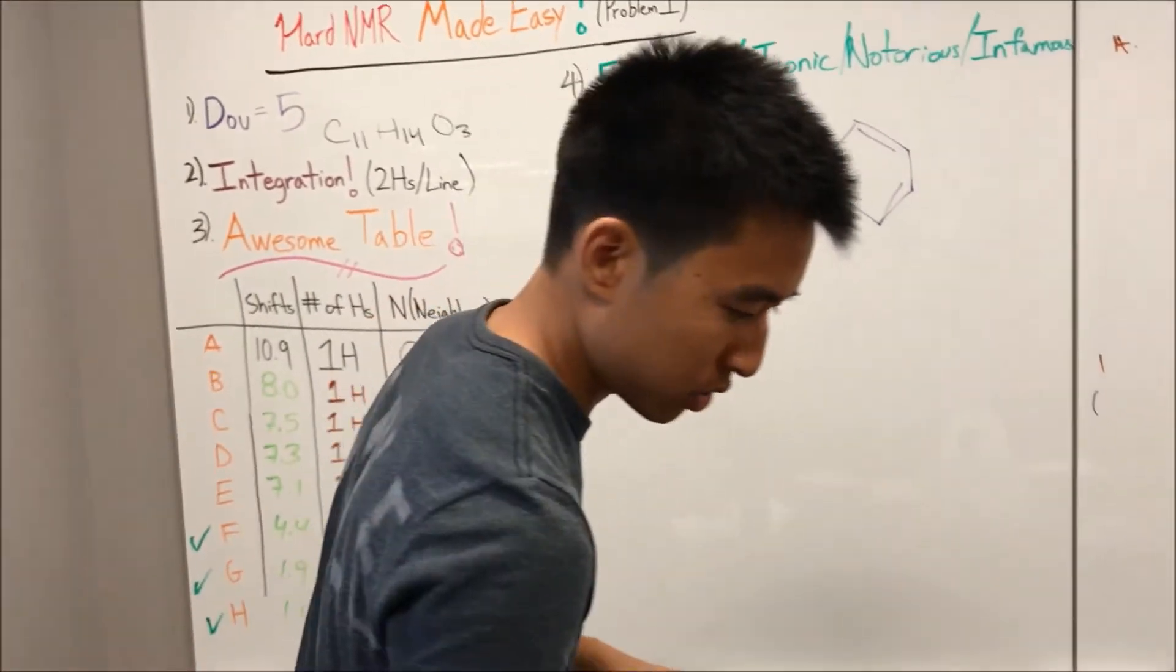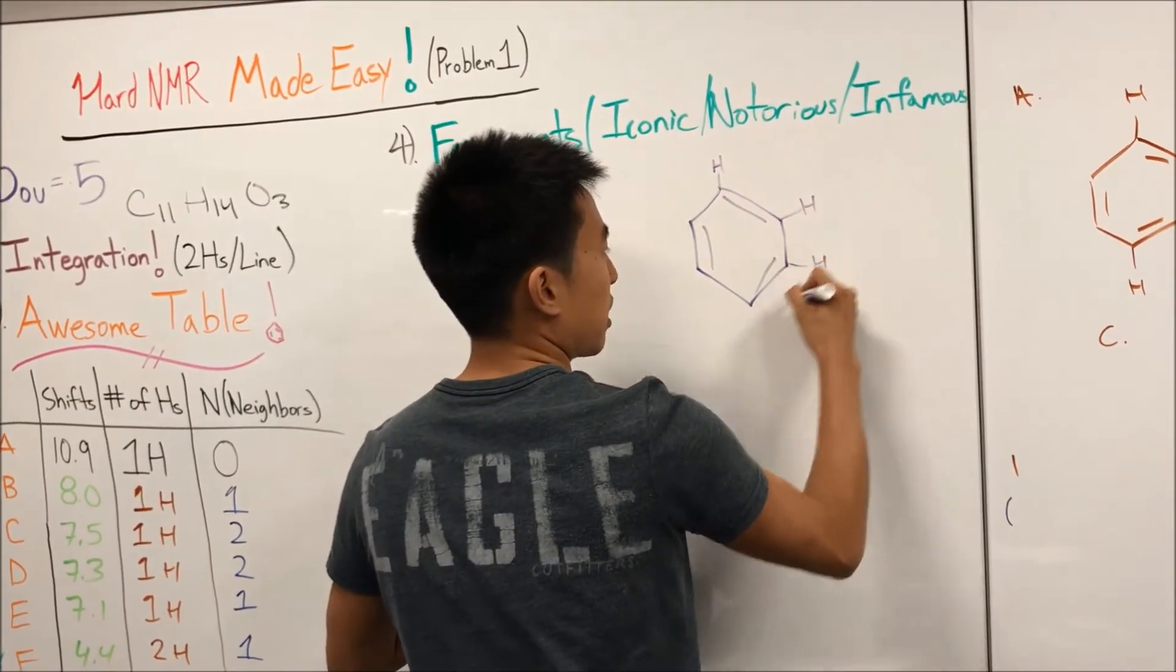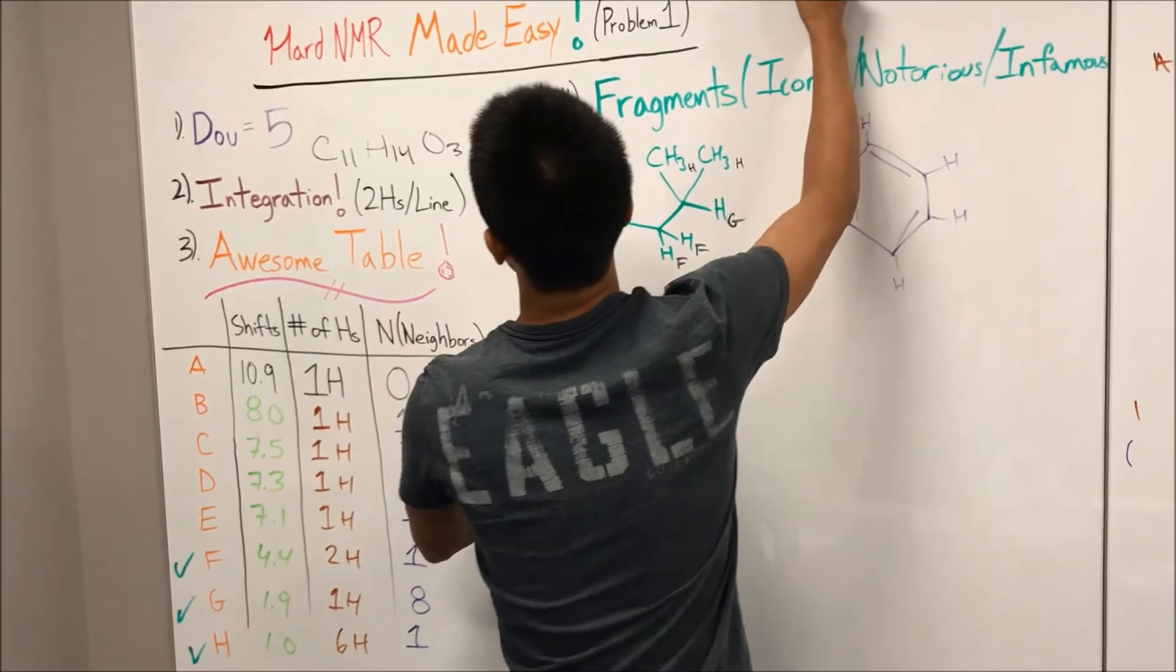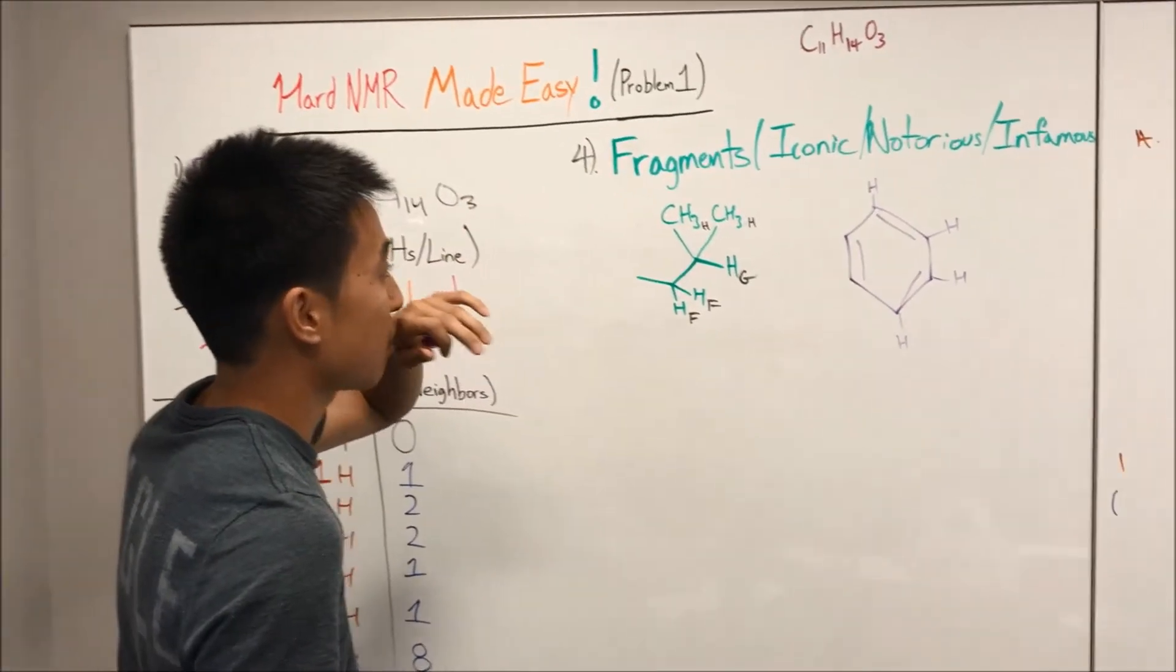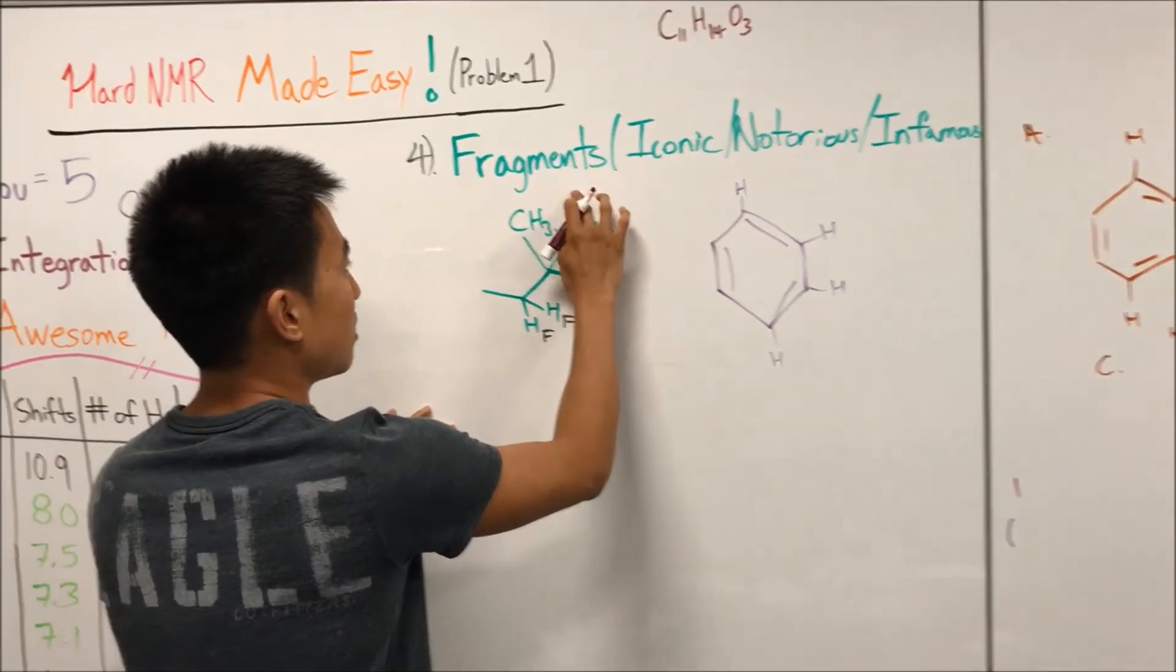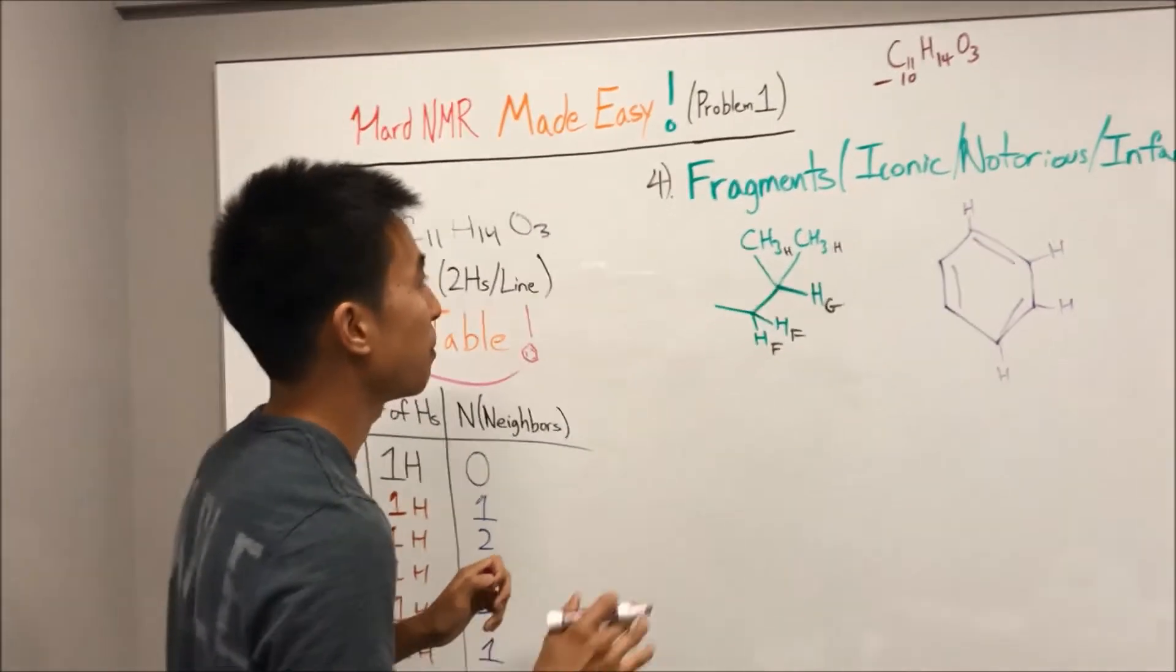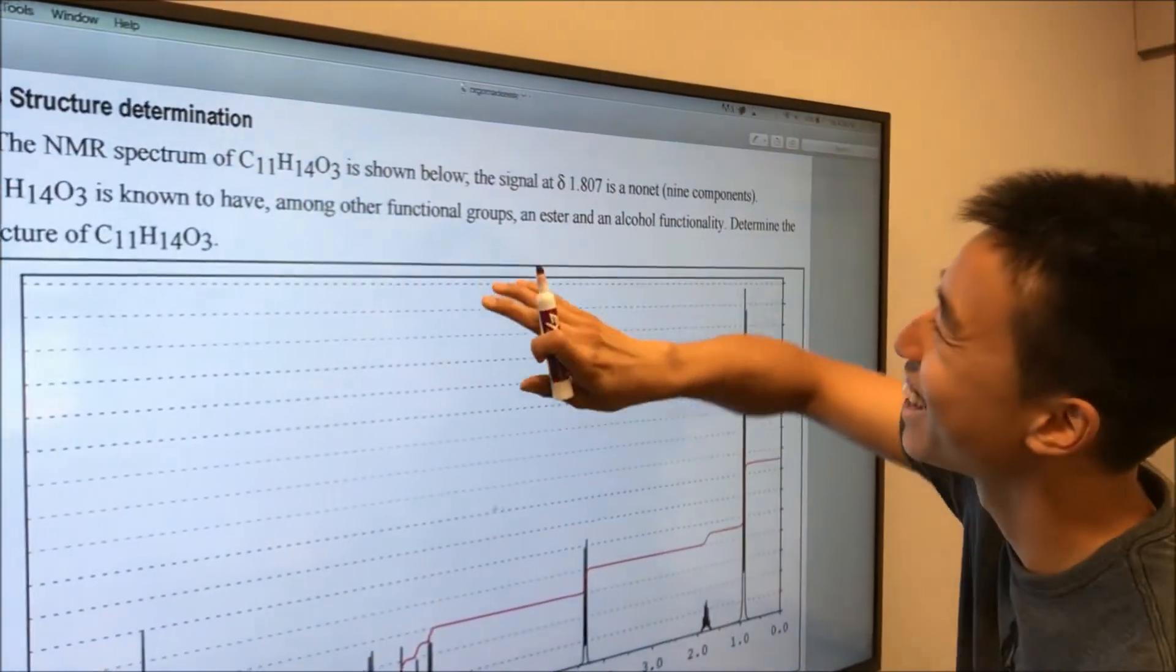Alright, so going back to purple. So now we know that, thanks to Lyndon, that the structure has to have this setup of hydrogens on the benzene ring. And we just found a whole bunch of stuff. So another trick I learned that you can do sometimes, you don't always need to do it, but I'll do it over here. So C11, H14, O3.